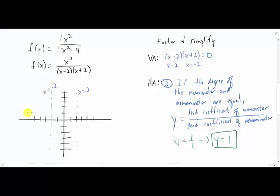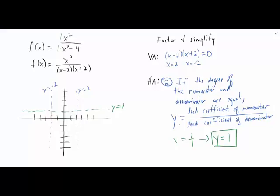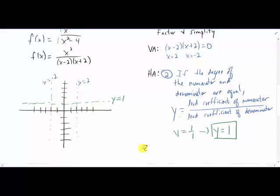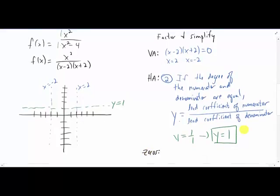If we draw that horizontal asymptote up on our graph, it looks something like that. Now there's another step when graphing rational functions, and it's finding the zeros. Finding the zeros of a rational function isn't very hard — you just take the numerator and set it equal to zero. In our example, we just have x squared as the numerator. Set that equal to zero and we just get the zero x equals zero. So that will go in as a point on the graph right there.